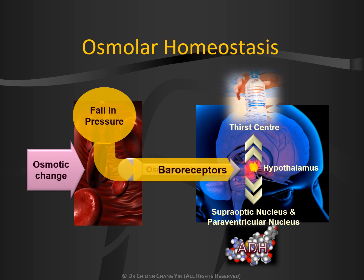However, there is an overriding mechanism in which when there is a fall in the intravascular pressure, the baroreceptors are activated. Irregardless of the osmolality in the bloodstream itself, the thirst center will be activated and ADH will also be secreted. It is very important to note this overriding mechanism of the baroreceptors resulting in a secretion of ADH, irregardless of the osmolality in the bloodstream.